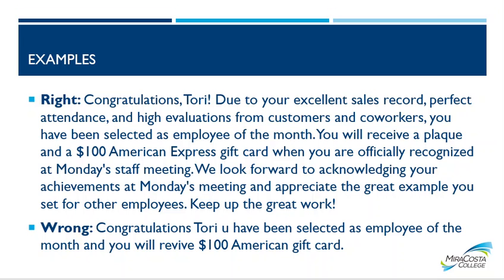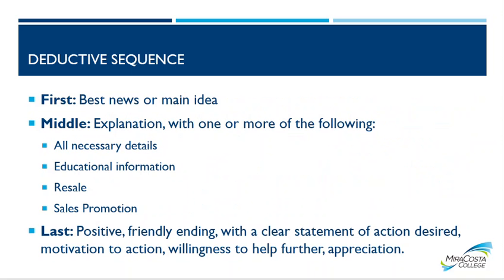Here's an example of a right way versus a wrong way on a congratulations message. The correct version: 'Congratulations, Tori. Due to your excellent sales record, perfect attendance, and high evaluations from customers and coworkers, you have been selected as employee of the month. You'll receive a plaque and a $100 American Express gift card when you are officially recognized at Monday's staff meeting. We look forward to acknowledging your achievements at Monday's meeting and appreciate the great example you set for other employees. Keep up the great work.' This is correct — it follows the steps from the previous slide: first, middle, last. It's short and sweet but still has all three parts.